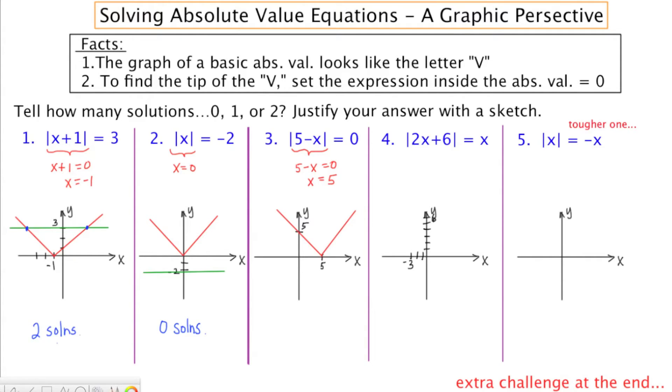The right-hand side is the constant zero, or Y equals zero. This is going to be a horizontal line that passes through the Y-axis at zero. It's basically the X-axis.